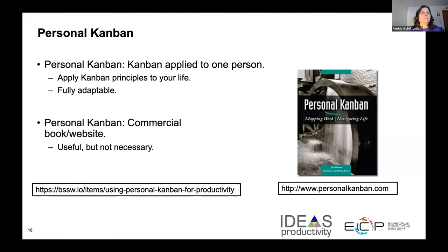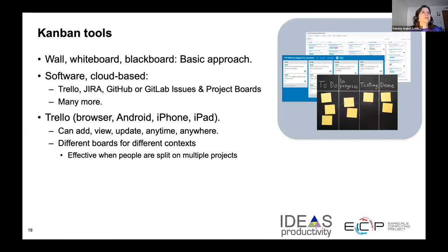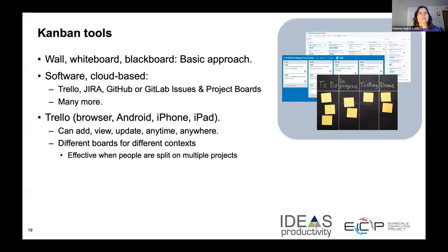Here are some basic Kanban tools. You can start with a blackboard or whiteboard with Post-it notes and then transfer to a cloud-based tool. There's Trello, Jira, GitHub Issues, and the project boards associated with GitHub or GitLab, among many more. Trello is free software and useful because you can update it from a browser, smartphone, or iPad — anywhere. You can have different boards for different contexts, and it's very effective for people split across multiple projects.